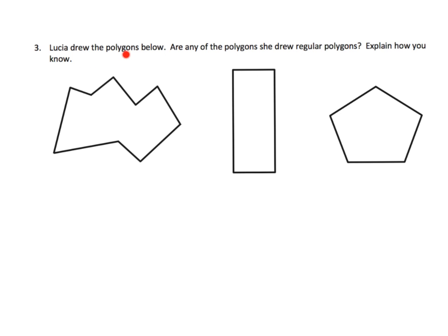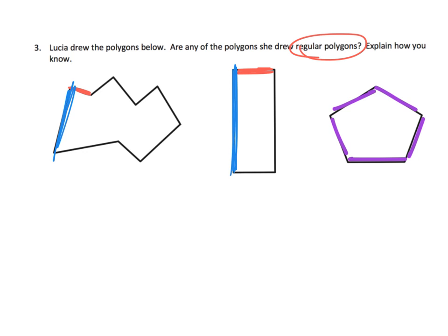Here we have Lucia, who drew the polygons below. Are any of these polygons regular polygons? We're looking for a figure made up of all equal sides. The first shape is definitely not a regular polygon because it has a short side and a really long side. This rectangle is also not regular because it has a short side and a long side. But when we look at this pentagon — it looks like it's made up of one, two, three, four, five identical side lengths — so I'm going to say this one is a regular polygon.